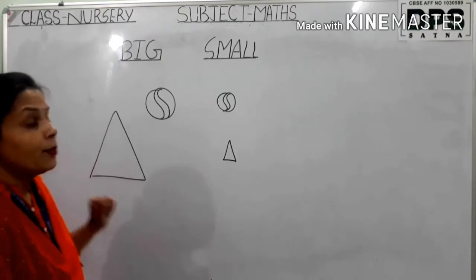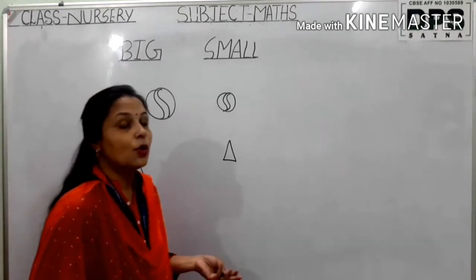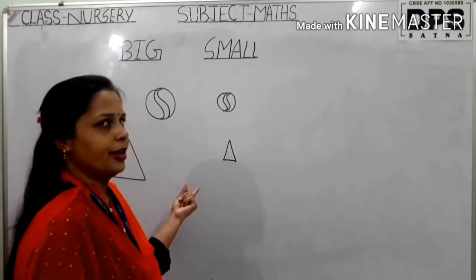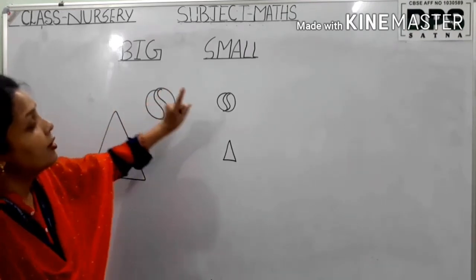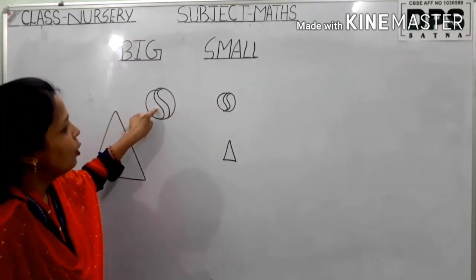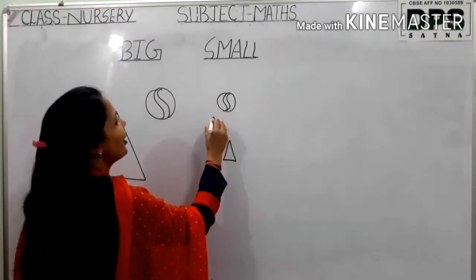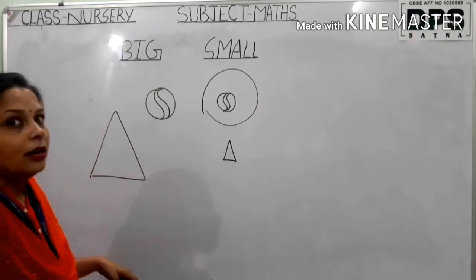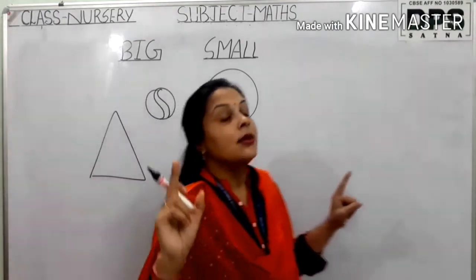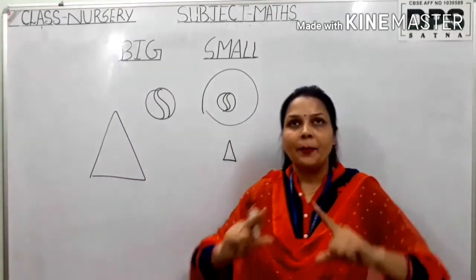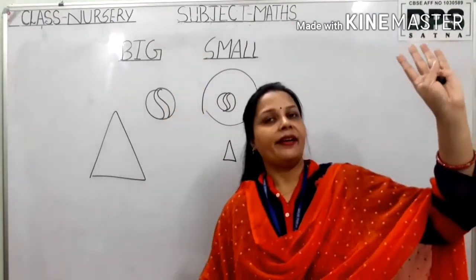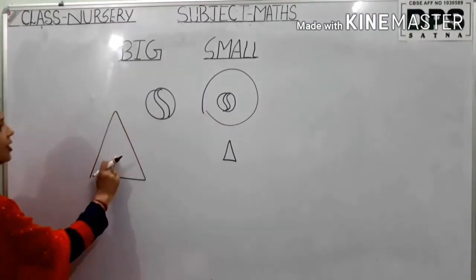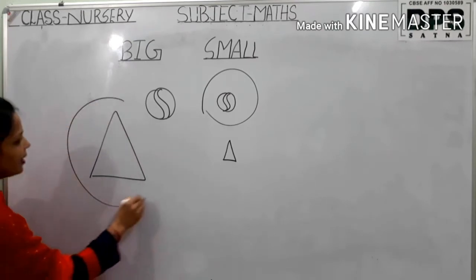Tell me: if ma'am says circle the small ball or circle the small object, what will you do? You have to circle the small object. In these two balls, which one is the small ball? This one. Now make a circle. Now triangle — ma'am says circle the big triangle. Circle means you have to circle it. Which one? The big triangle — the one that is large. This one is small, this one is big. Now I circle it.